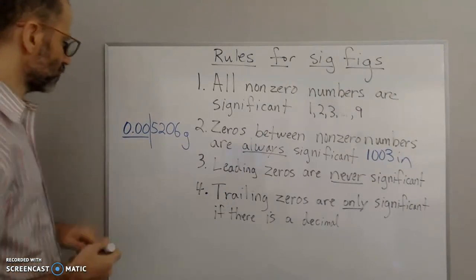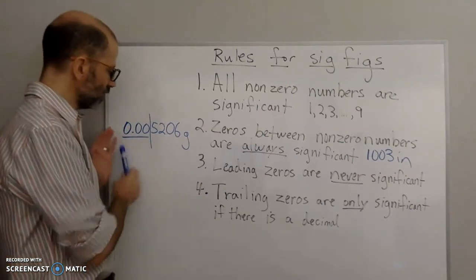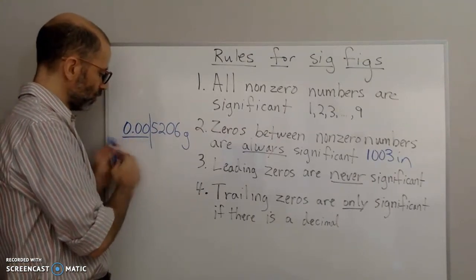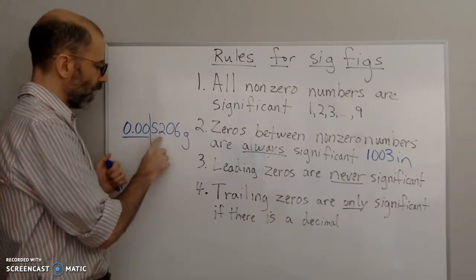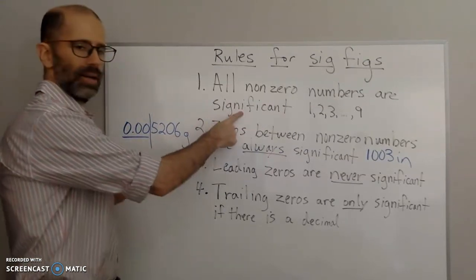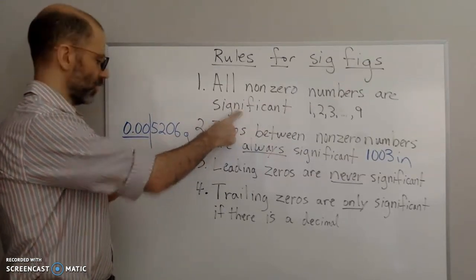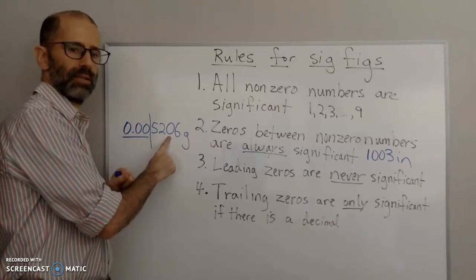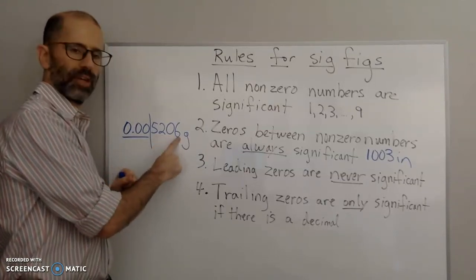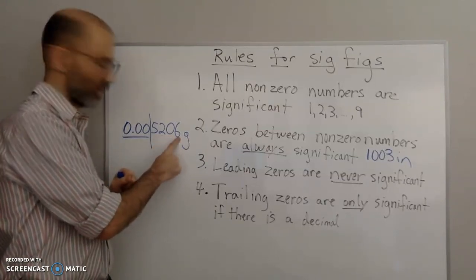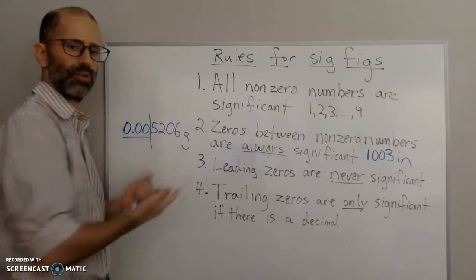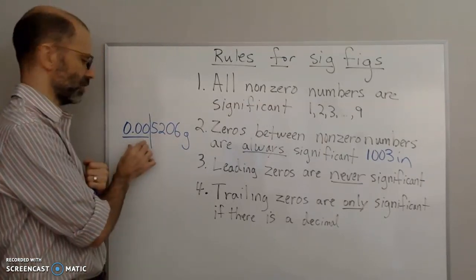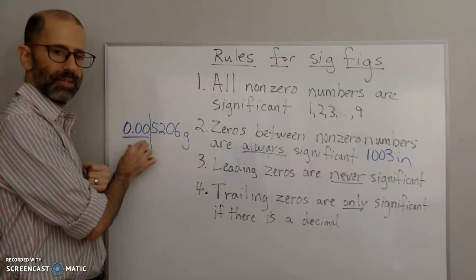So for the number 0.005206, we ignore the leading zeros. The 5, 2, and 6 are non-zero so those are significant. The zero falls between 2 and 6, so that is also significant. This gives us 4 significant figures.